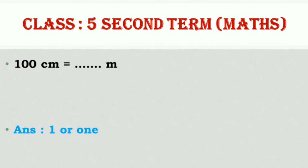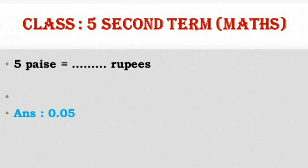100 centimeters is equal to 1 meter. 5 paise is equal to 0.05 rupees.